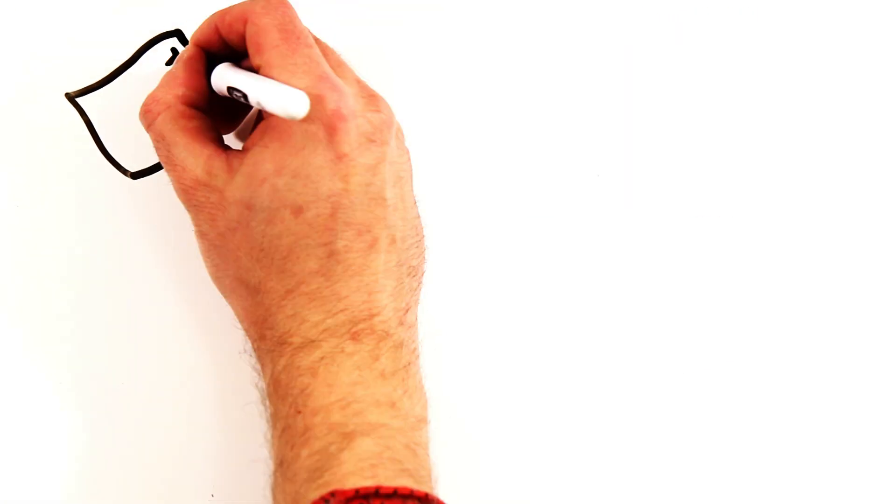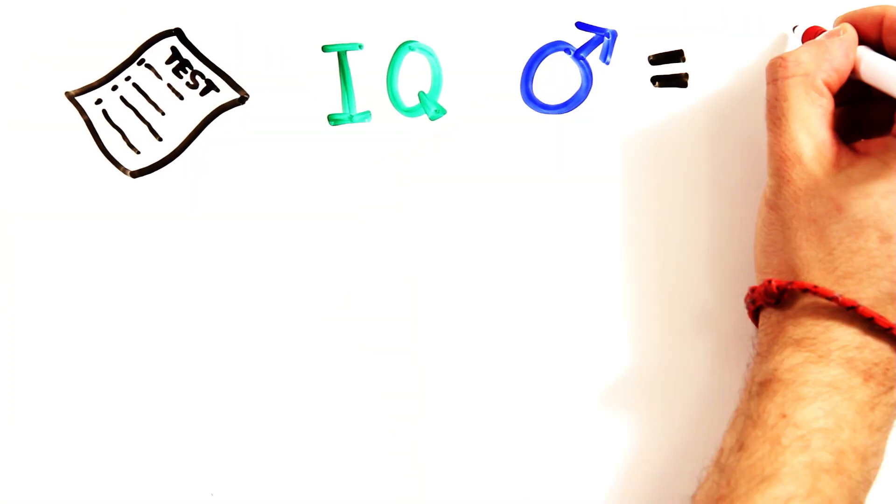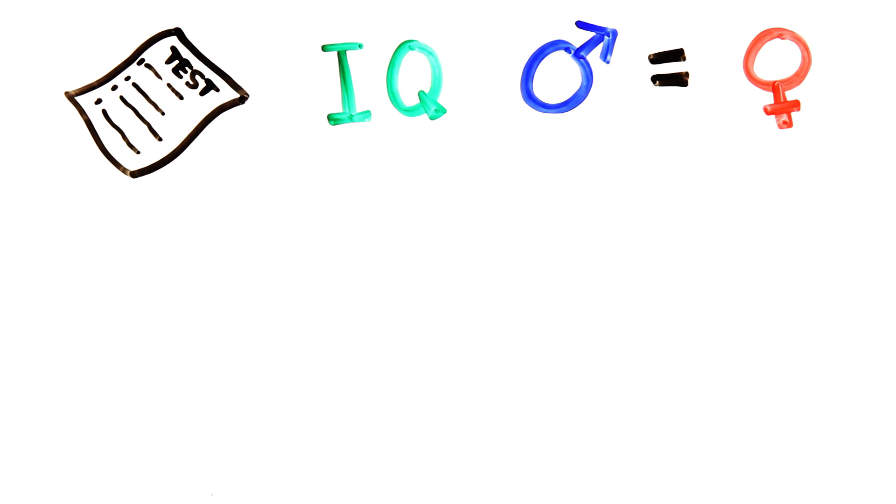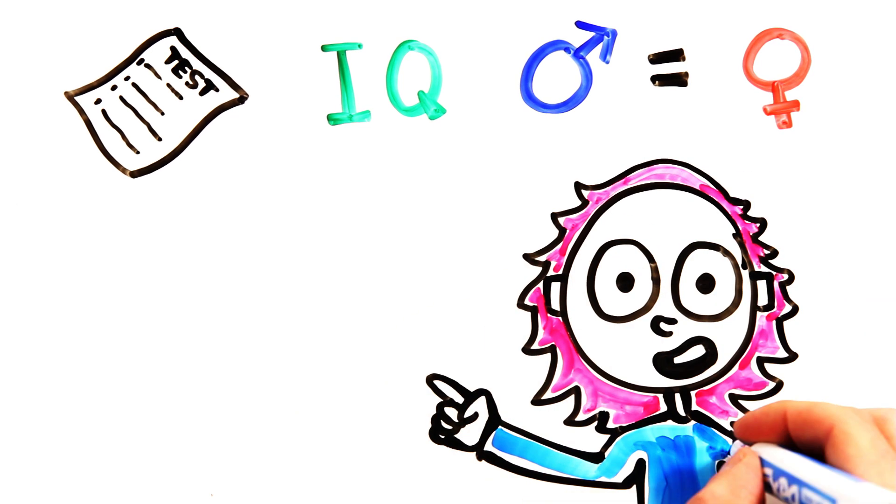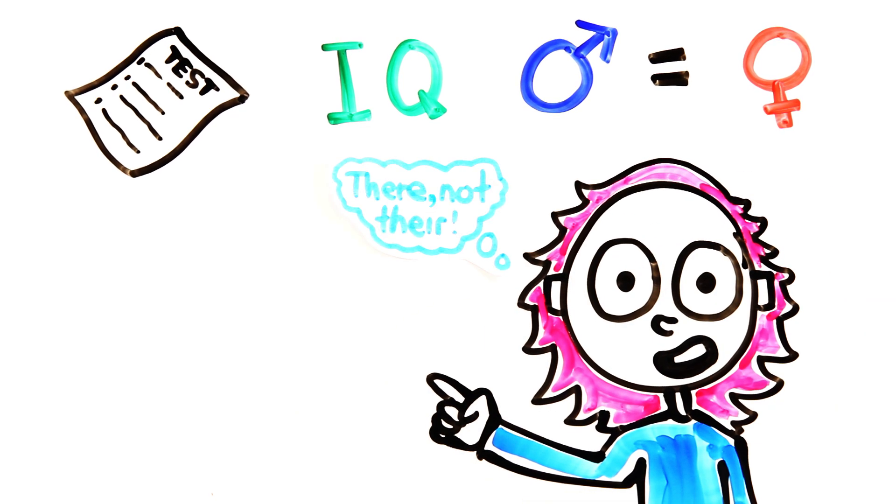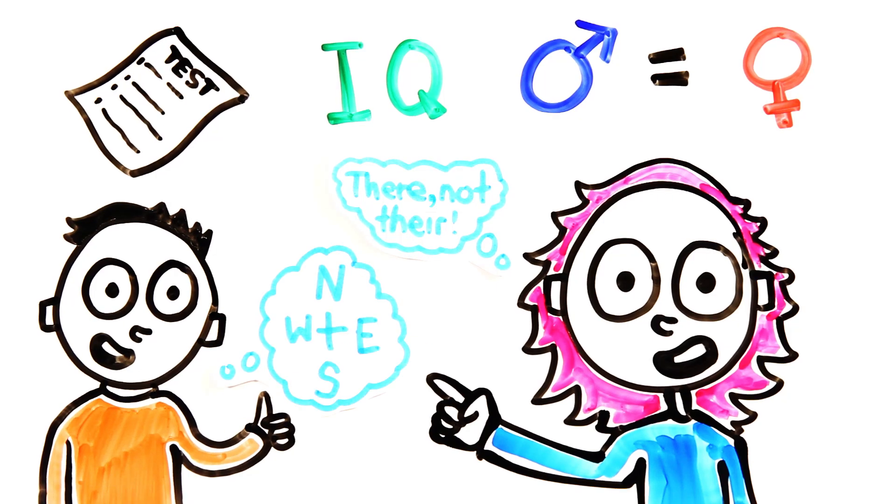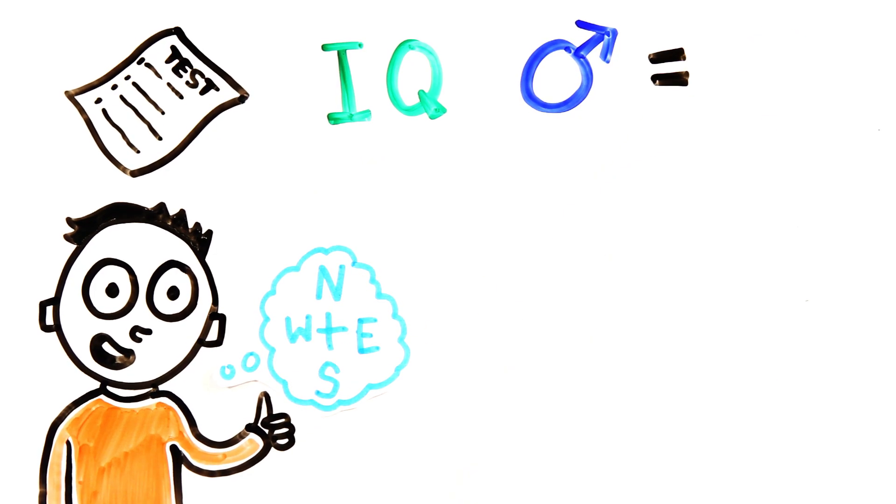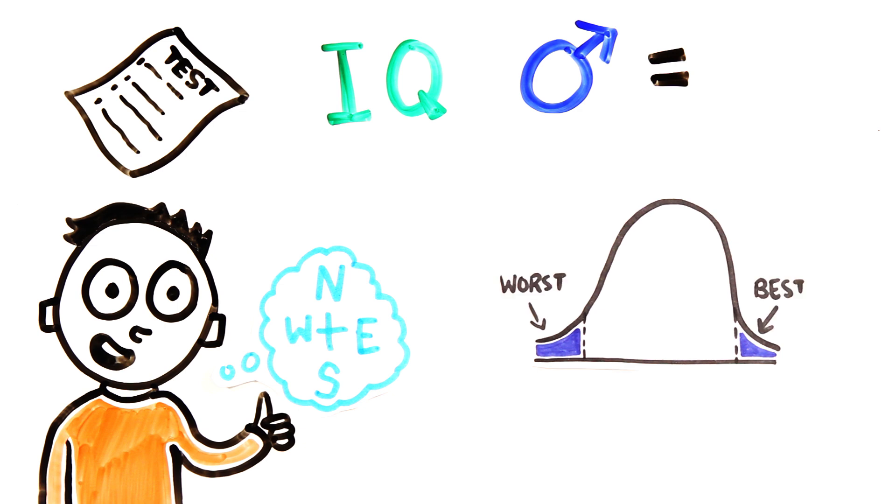Tests on intelligence find similar results, with major IQ studies showing negligible or no sex differences in general intelligence, but do show women having stronger verbal abilities, while men show stronger visual-spatial abilities. Interestingly, studies show more male variants in tests, with their scores being both the worst and the best.